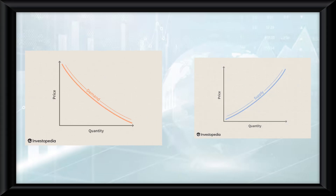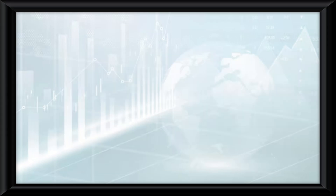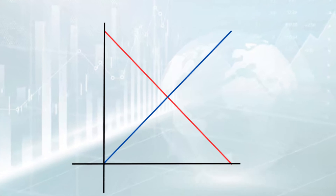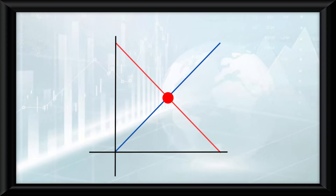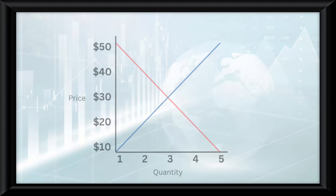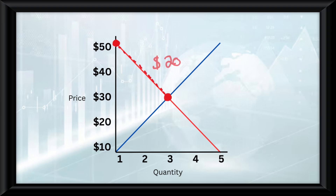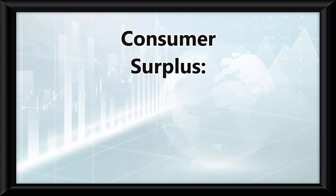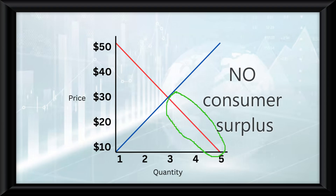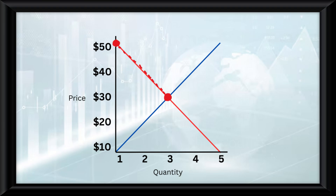If we put the downward sloping demand curve and upward sloping supply curve onto one graph, we get the supply-demand model. The intersection point shows when the model is in equilibrium, meaning the producer stands to gain the most profit from the willingness of consumers to buy the product. On the demand curve, if someone was willing to pay $50 for the product but actually paid the market equilibrium of $30, the $20 difference is known as the consumer surplus — calculated as what consumers are willing to pay minus what they actually pay. The consumer surplus makes a triangle on the graph, and you calculate it using the area formula: one half base times height.